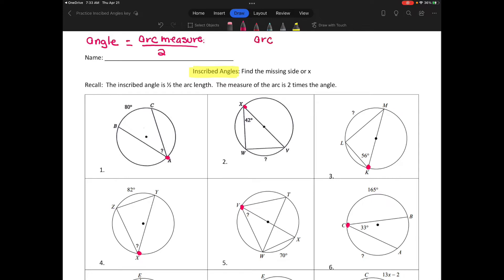If you're finding the arc measure you multiply by two. If you're finding an angle you divide by two. To find the angle, divide by two; to find the measure, multiply by two.